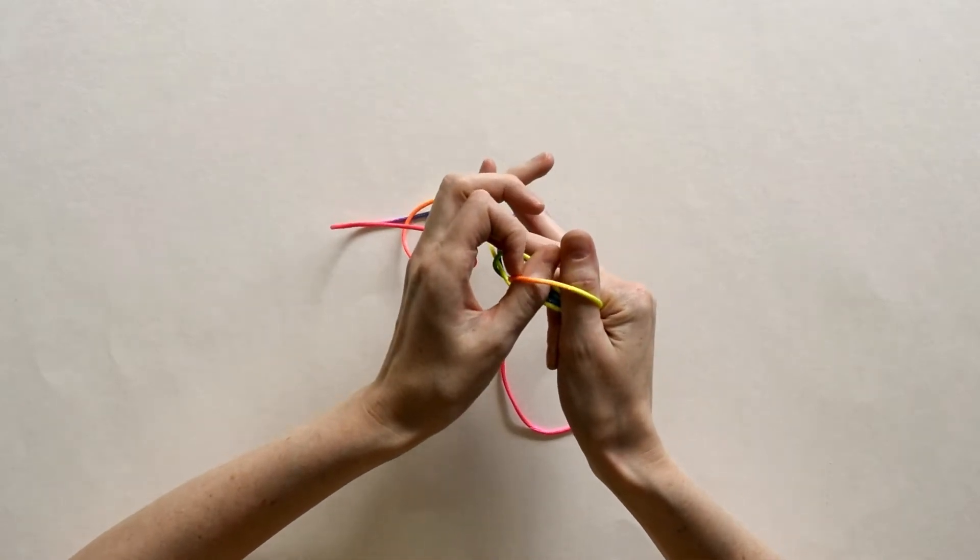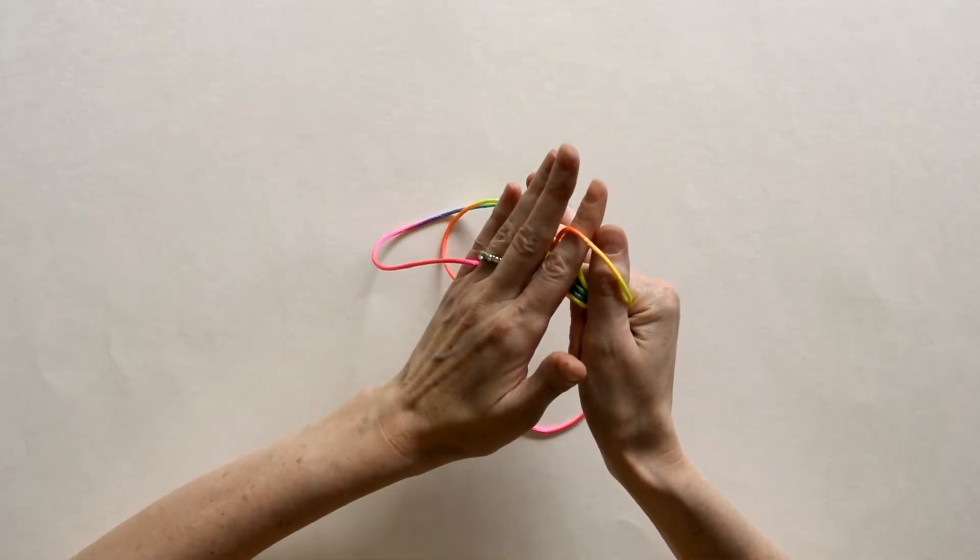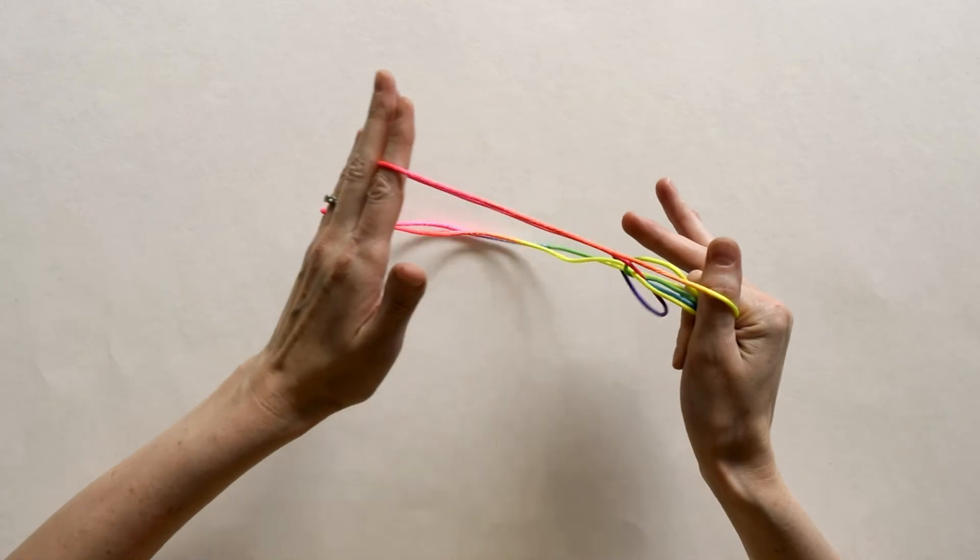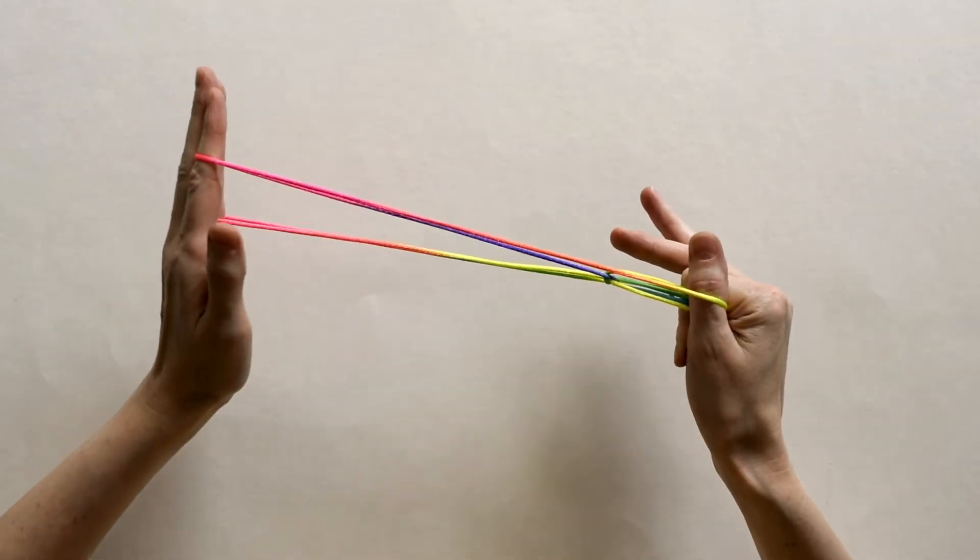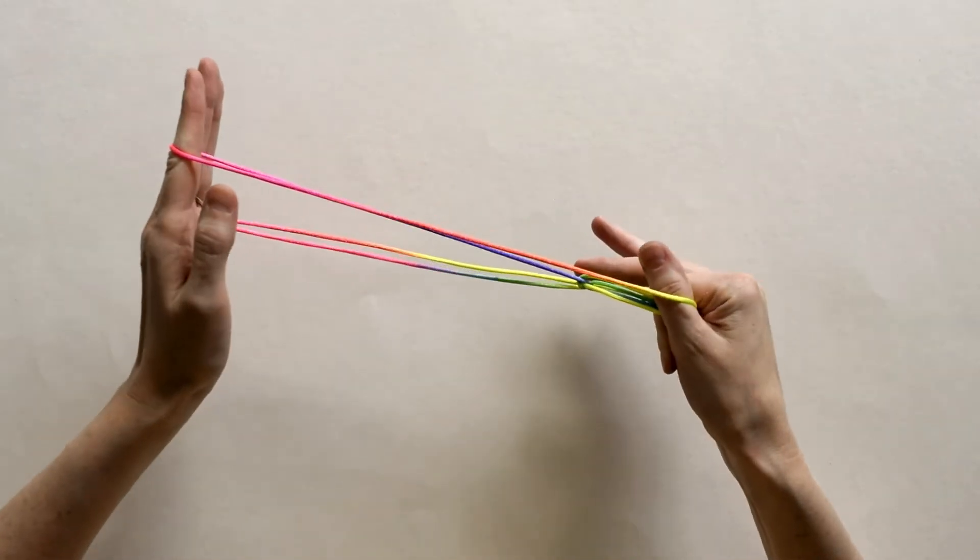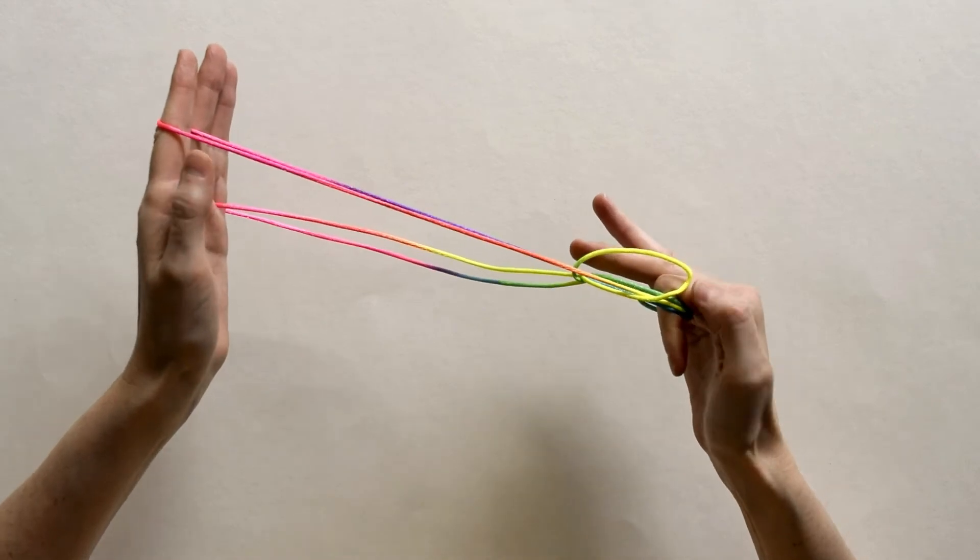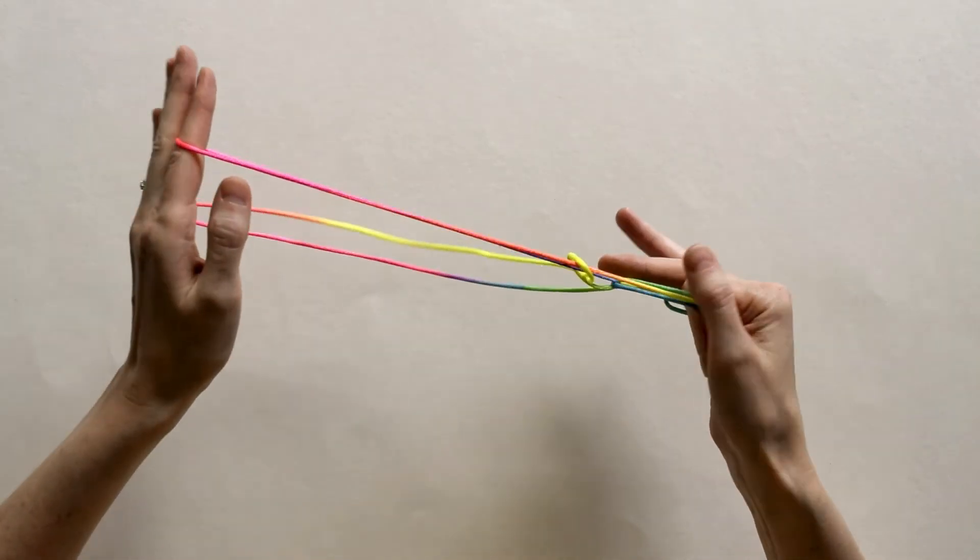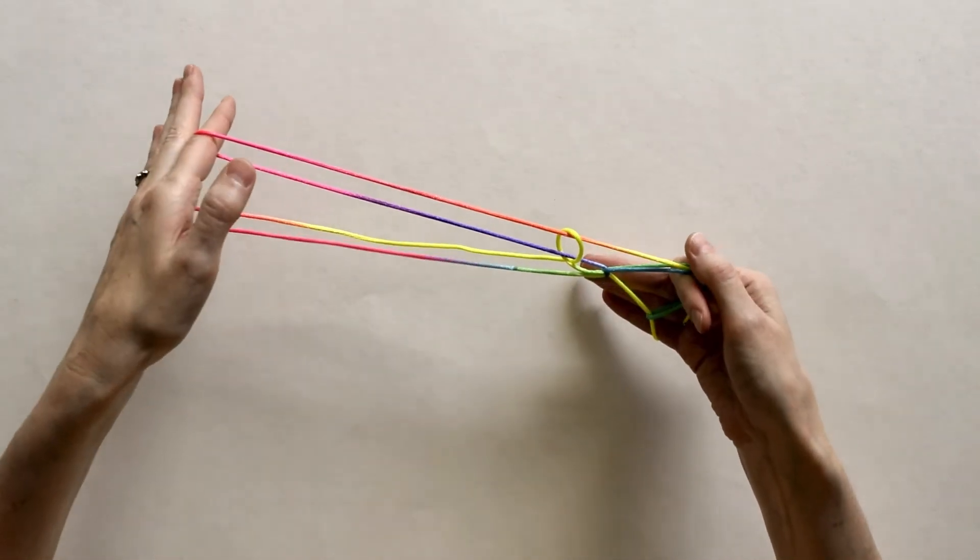I'll then take my left index finger, grab the right thumb loop and pull back. Now I'm going to take my right thumb out of that loop and that one there is going to be the head of your caribou, so make sure it's not too big.